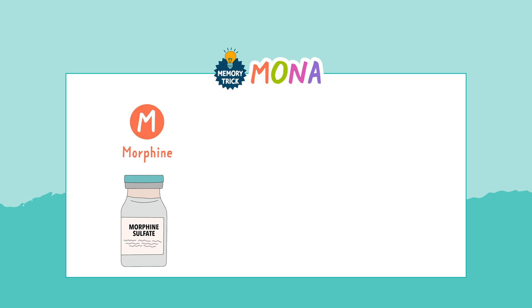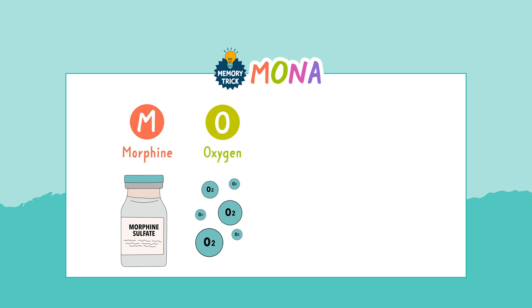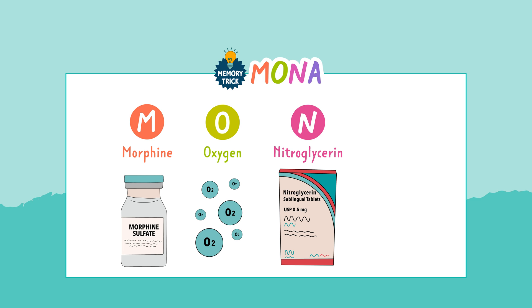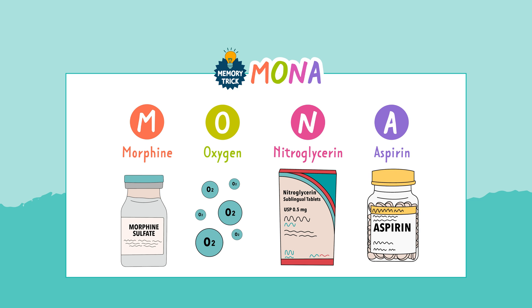Now for the treatment. We can remember the treatment with the mnemonic MONA. MONA is not the order in which you do these tasks — it's just a mnemonic to help you remember the treatment. M is for morphine, which takes some of the workload off the heart and can relieve pain. O is for oxygen, because the heart is being oxygen deprived, so the body needs more oxygen to survive. N is for nitroglycerin, a vasodilator which opens the vessels to help blood get through. A is for aspirin, which prevents platelets from collecting and sticking together.